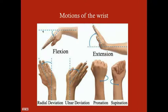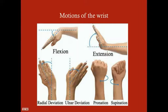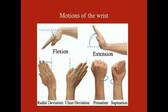The first set of motions are flexion and extension. Flexion is defined as reducing the angle of a joint — if you set anatomic position at 180 degrees, flexion reduces that angle. Extension increases that angle. Radial and ulnar deviation are named based on direction: radial deviation moves the wrist laterally toward the thumb side, ulnar deviation moves it medially toward the pinky side.